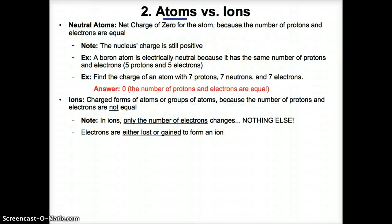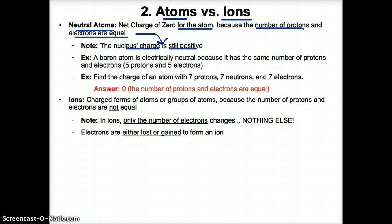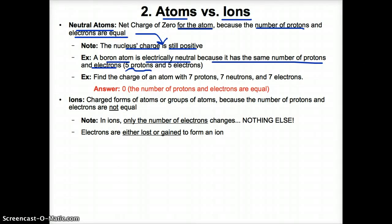Now let's discuss what atoms are versus what ions are. Neutral atoms have a net charge of zero overall because the number of protons and electrons are equal. But the nuclear charge is always still positive, because the only things that contribute any charge in the nucleus are the protons. For example, a boron atom is electrically neutral because it has five protons and five electrons, based on its atomic number.